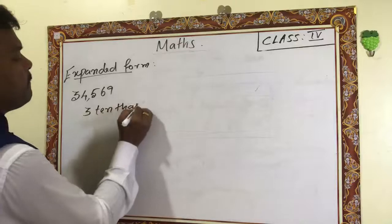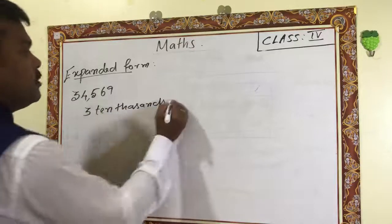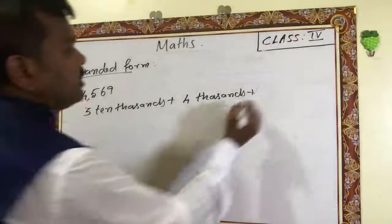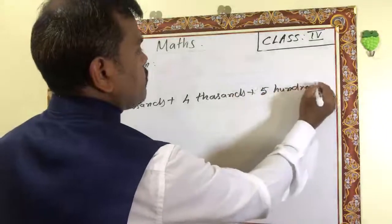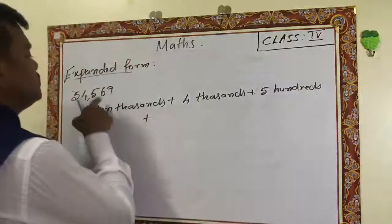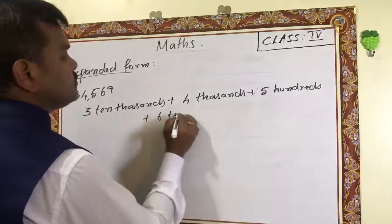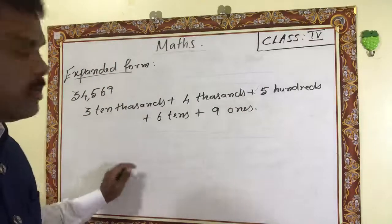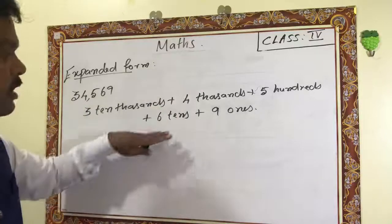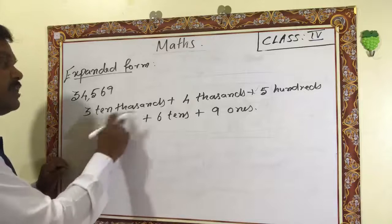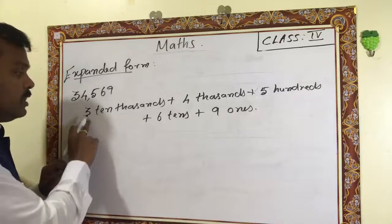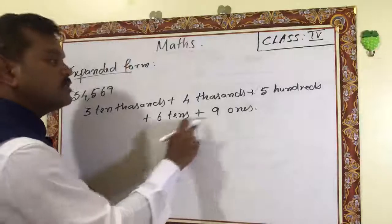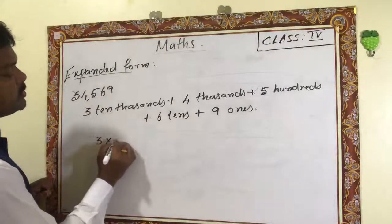34,569 equals three ten-thousands, plus four thousands, plus five hundreds, plus six tens, plus nine ones. If you are reading this from a place value chart, you can get it like this: three times ten-thousands, four times thousands, five times hundreds, six times tens, and nine ones.